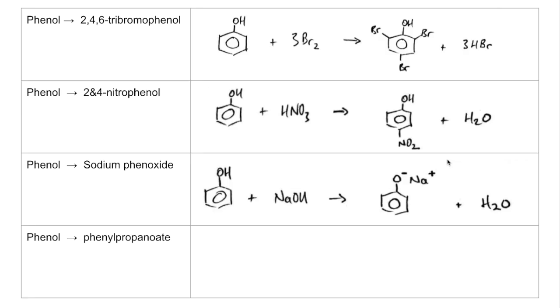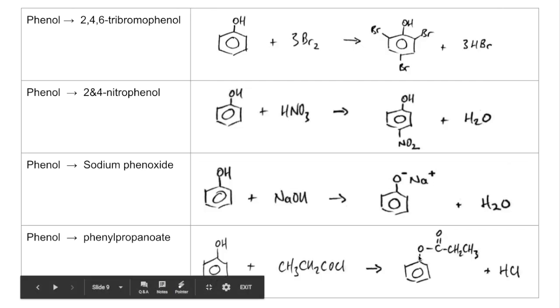And finally, phenol to phenylpropanoate, the ester. So we're reacting the phenol with propanoyl chloride. Like I said before, the phenol provides the phenyl part of the ester and the propanoate part is this bit here from the propanoyl chloride.